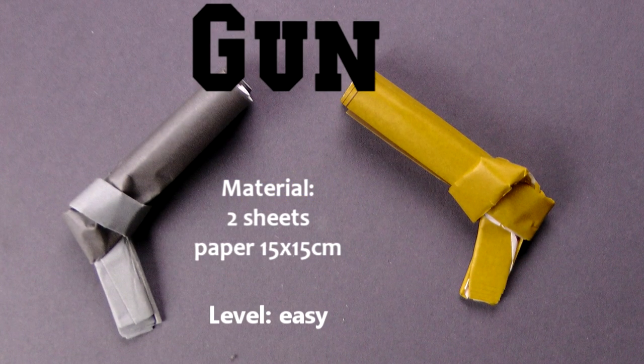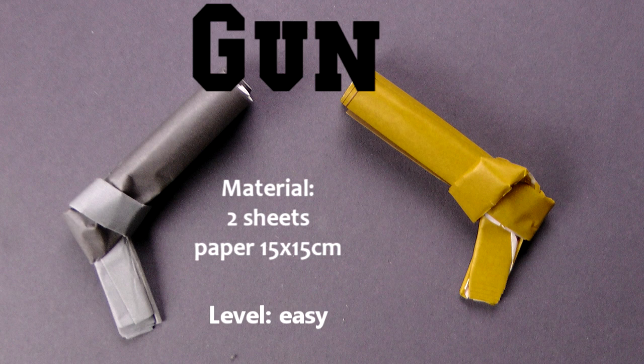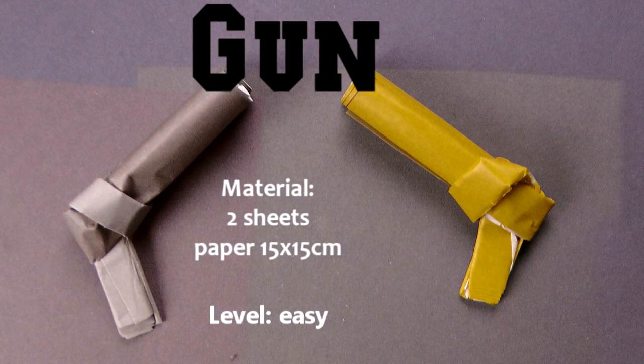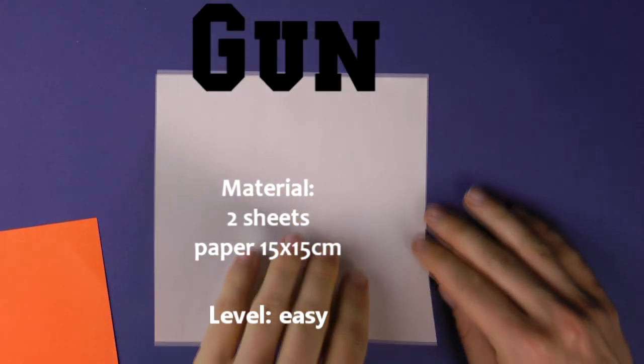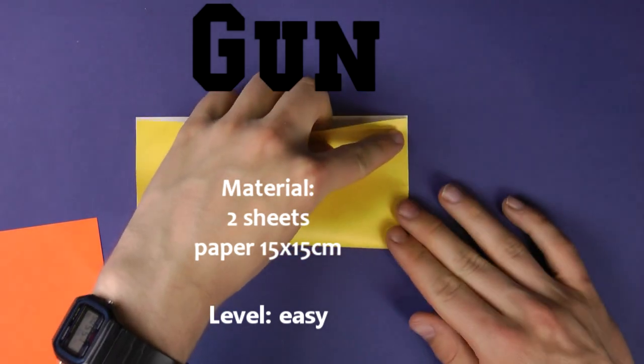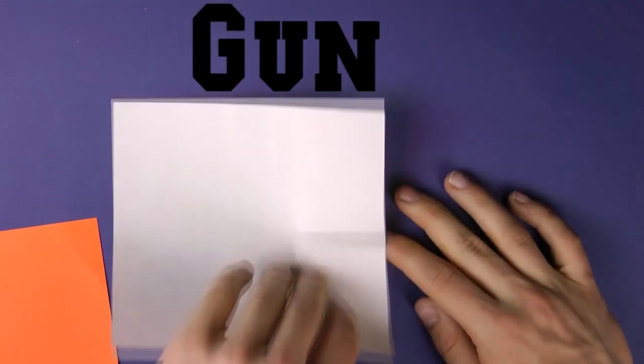Hello dear friends of the folded sheet. Today we'll fold a simple paper gun. A small boy showed me how to do it. It's from his schoolyard apparently, so I'll say it's a traditional model. You need two ordinary sheets of origami paper for it, or any other kind of paper.